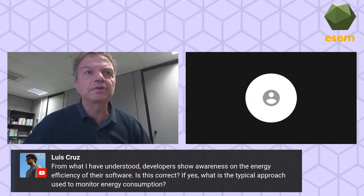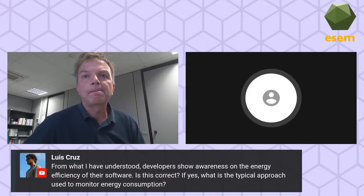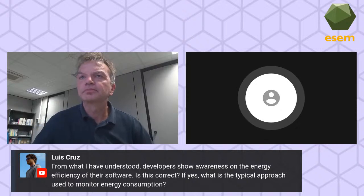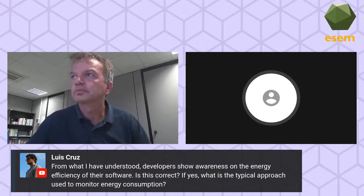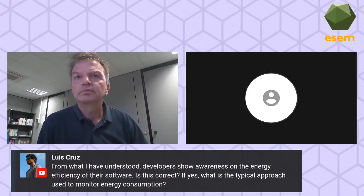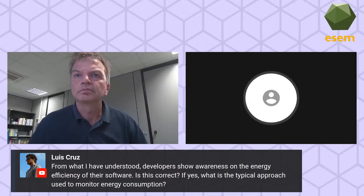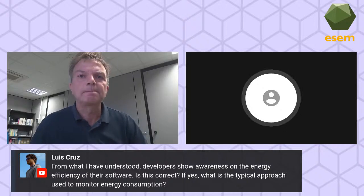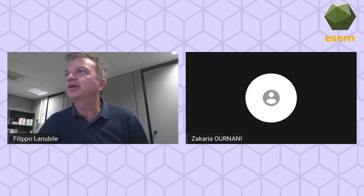On the question of developer awareness and typical monitoring approaches: developers are aware that energy consumption problems exist, but they don't have enough knowledge on how to detect and deal with them. There are some primitive tools to monitor energy consumption and get results in joules, but what developers really need are KPIs. We currently don't have the right set of KPIs to properly monitor and communicate energy consumption results to both developers and decision makers so they can follow their software's energy consumption.